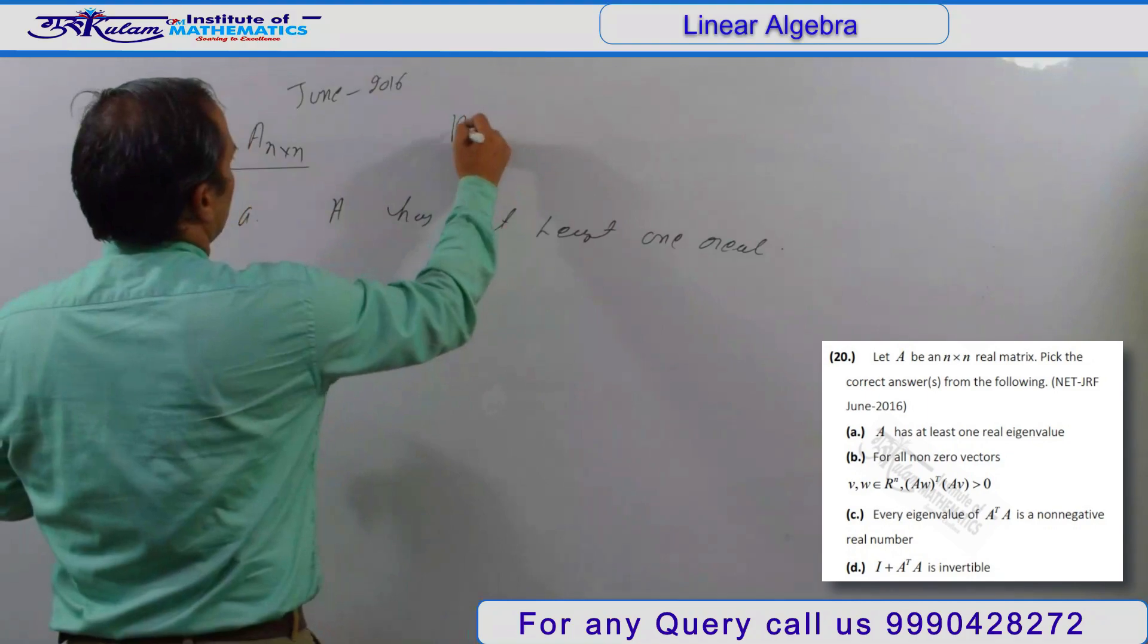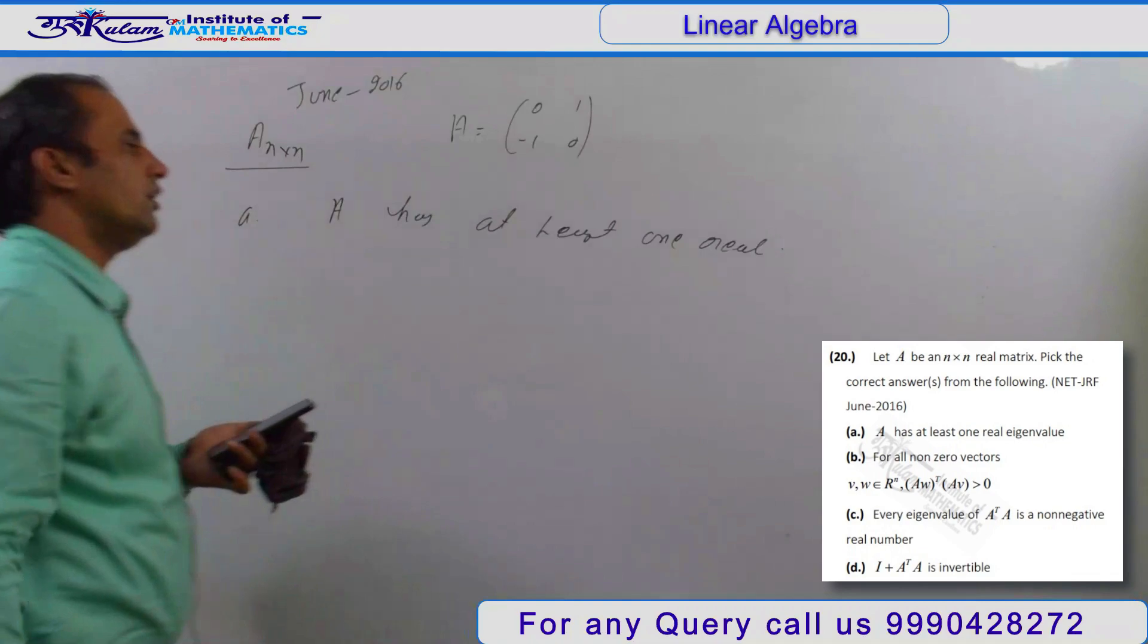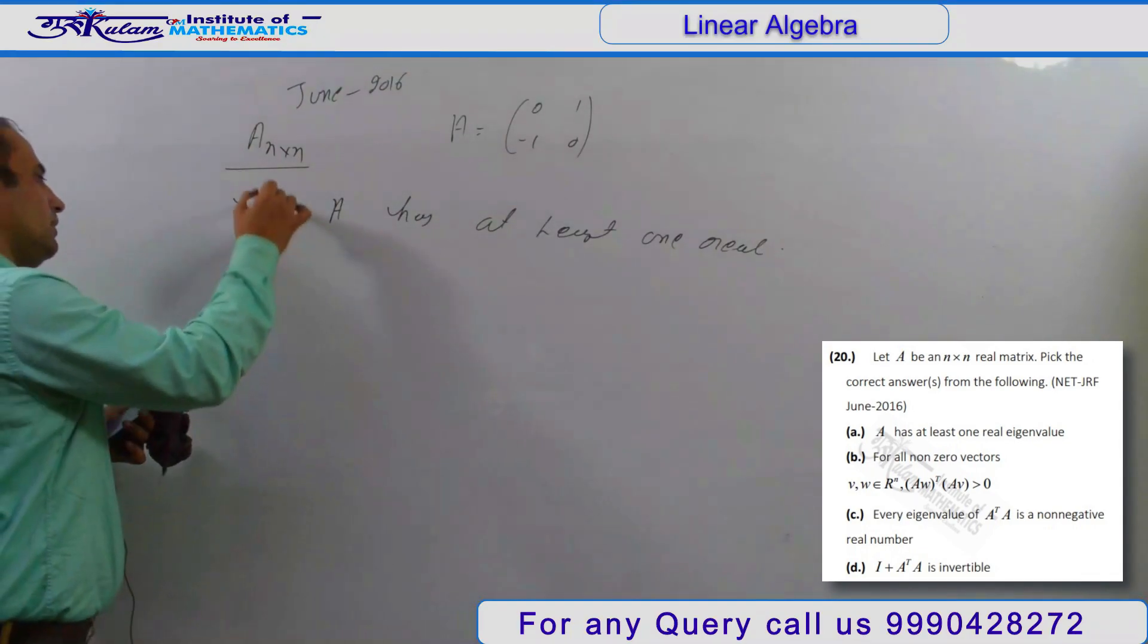Simply, if A has at least - take a 2×2 matrix: [0, 1; -1, 0]. This 2×2 matrix has no real eigenvalue.